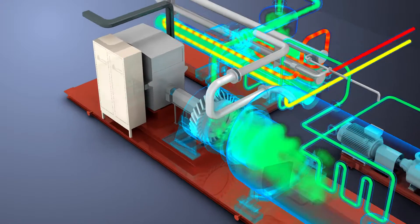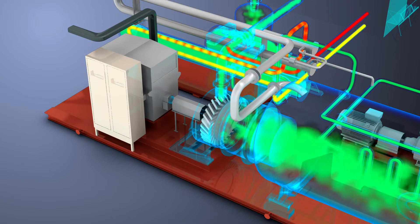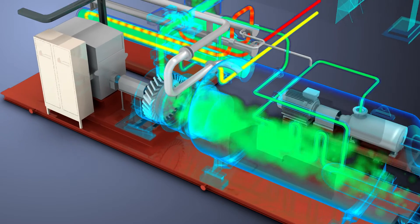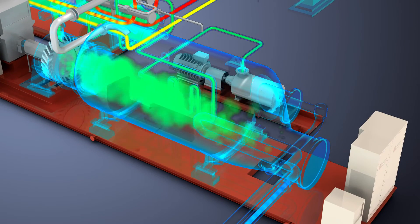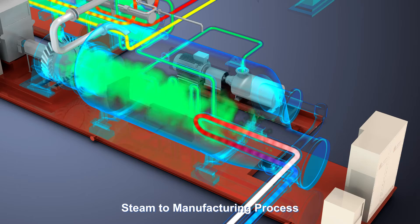Downstream the turbine, the organic vapor preheats the organic liquid in the regenerator and is then condensed, releasing its latent heat for steam generation, used by the manufacturing process.